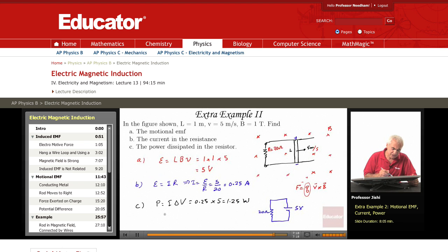You can also obtain this since the potential across the resistor is also IR, so it's just I squared R, which in this case is 0.25 squared.